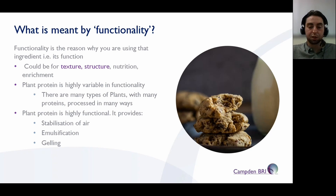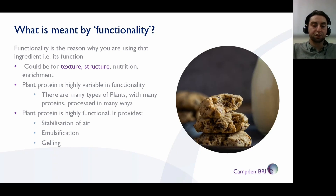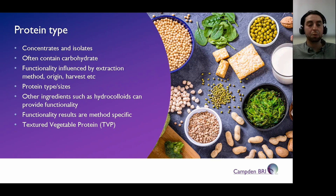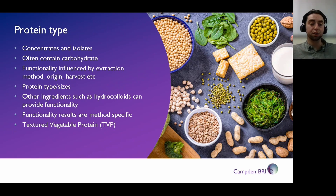The same functional properties are important when selecting plant protein as when using egg. Plant proteins are used to replace egg in lots of applications. So if you're replacing egg in a certain application, it's not the ingredient you need to replace — it's the functionality that ingredient is providing that you need to replace. For example, if you are making a mayonnaise, it may just be the emulsification that you need to replace, and you may want to replace egg with more than one ingredient, potentially a protein or other types of ingredients such as hydrocolloids.